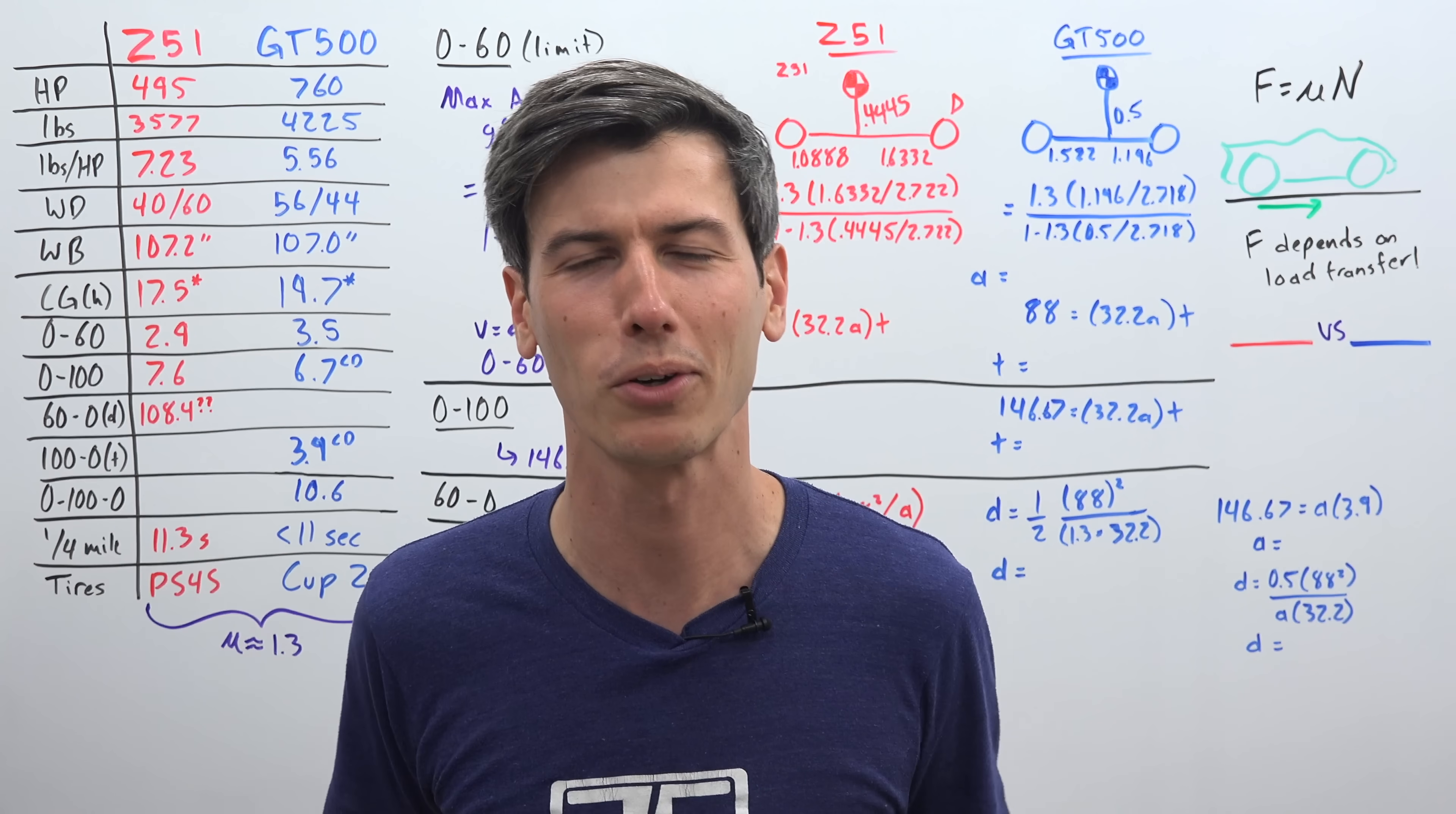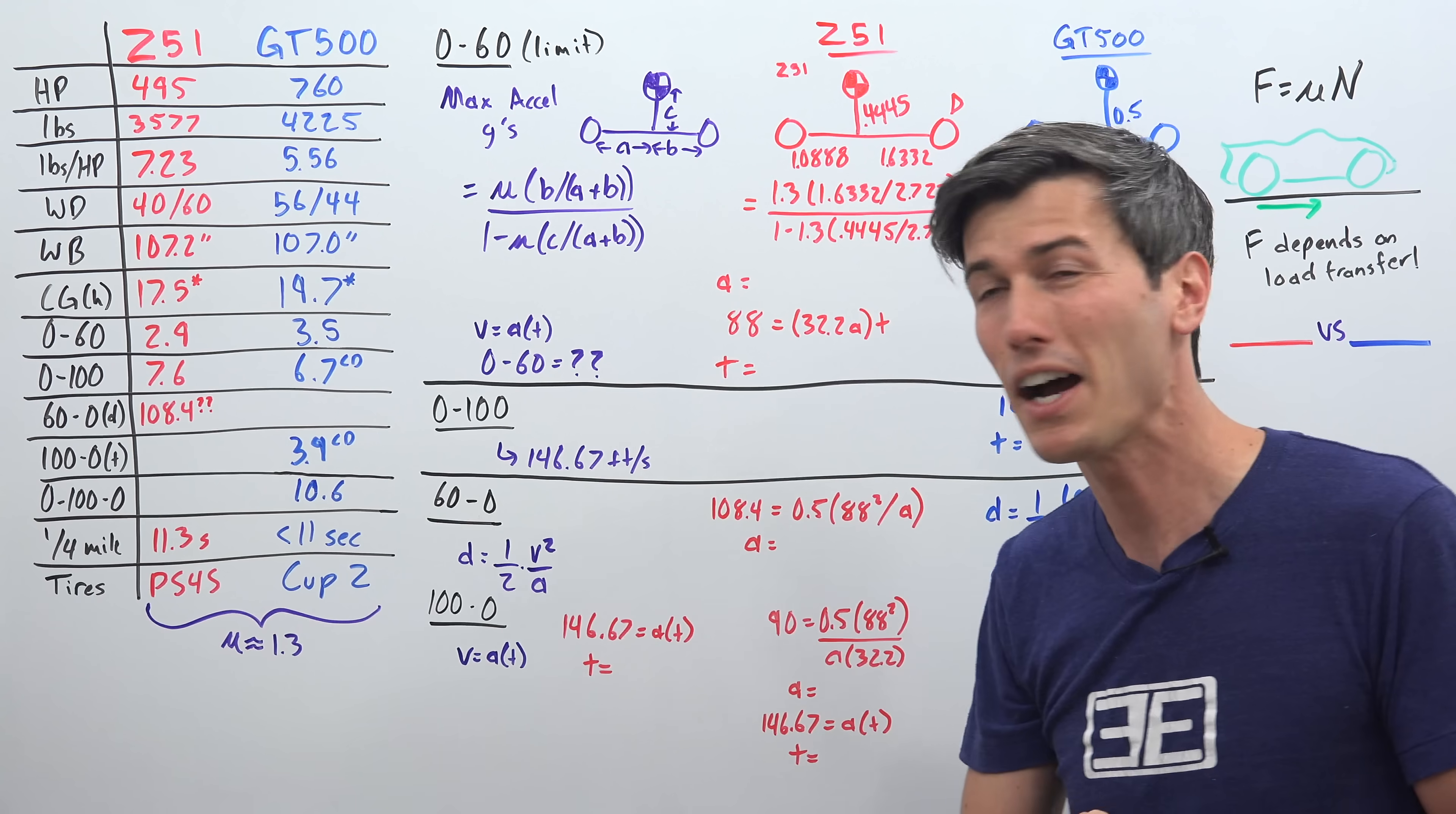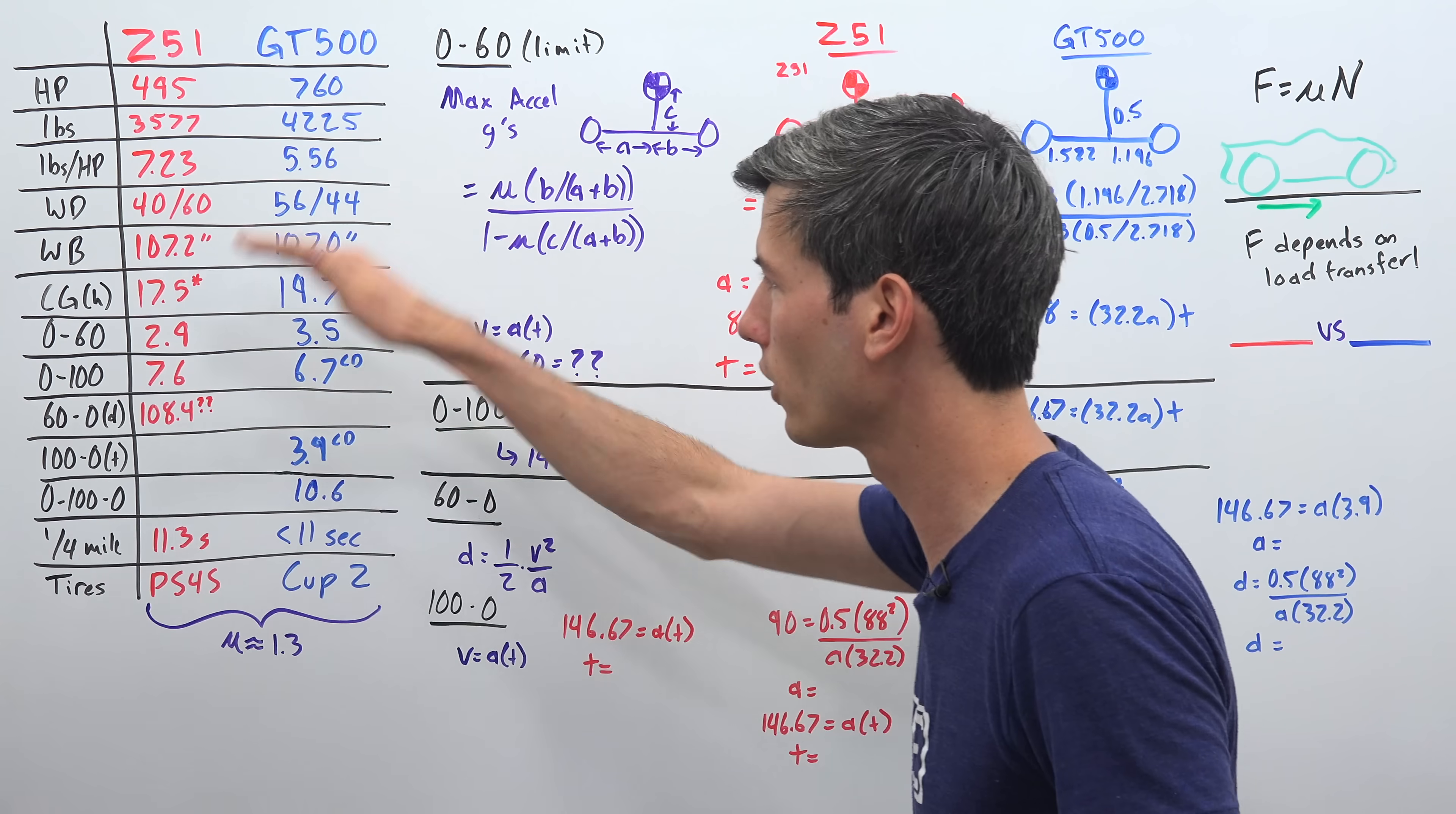The numbers are important regardless, these are objective measurements and it turns out the Z51 as Chevy claims will hit 0-60 in 2.9 seconds versus the mid threes for the GT500 at 3.5 seconds about. So with the GT500 760 horsepower, significantly more than the Corvette's 495. So how in the world is that Corvette able to accelerate faster to 60 miles per hour? We're also going to look at some other parameters.